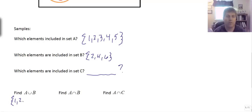So A union B would be all the items in all of the sets: one, two, three, four, five, and six. That is the union of those two sets.